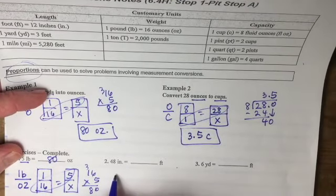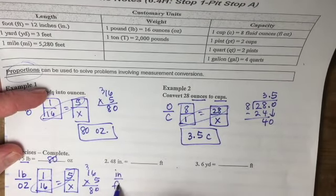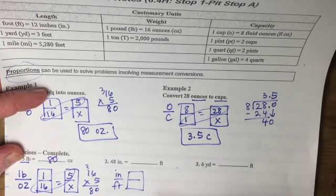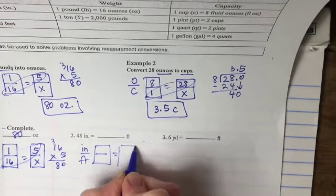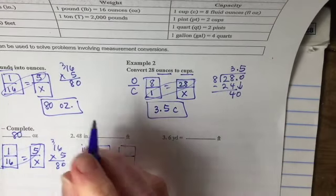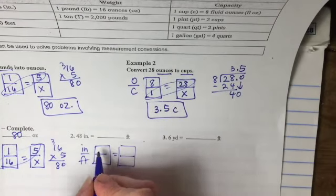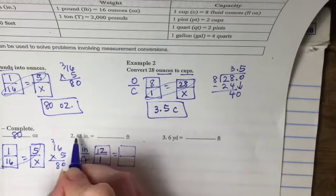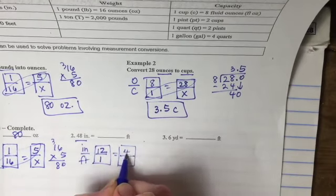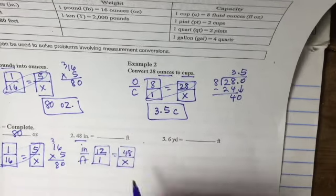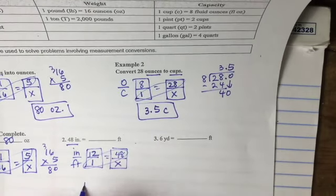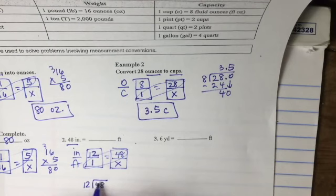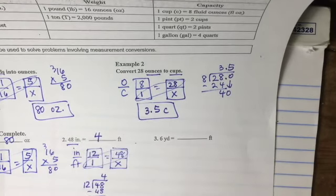48 inches into feet so I'm going to write inches over feet and set up my boxes. And I know from the chart or maybe I know in my head that there are 12 inches in one foot. I'm going to put the 48 up here with the inches. And this tells me to multiply 1 times 48 and then divide by 12. So if I divide 12 into 48 it's going to go 4 times. So my answer is 4 feet.